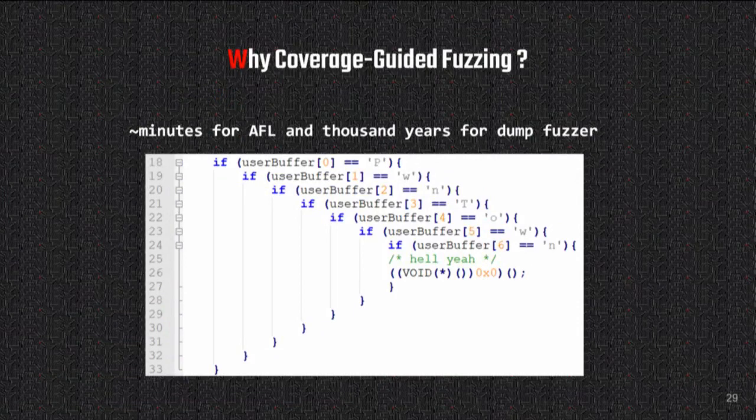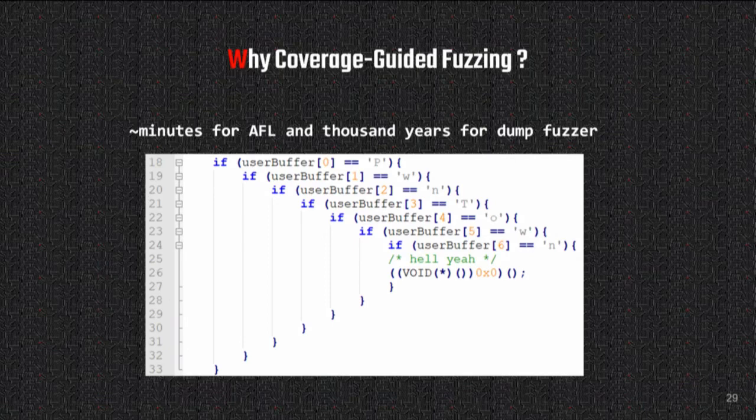During coverage-guided fuzzing, if we find a test case that triggers a new code path, the fuzzer saves it and performs subsequent mutations on top of that finding. This way we can reach much more code deeper in the program. A dumb blind fuzzer can eventually find the same paths, but it can take years compared to minutes for coverage-guided fuzzing.